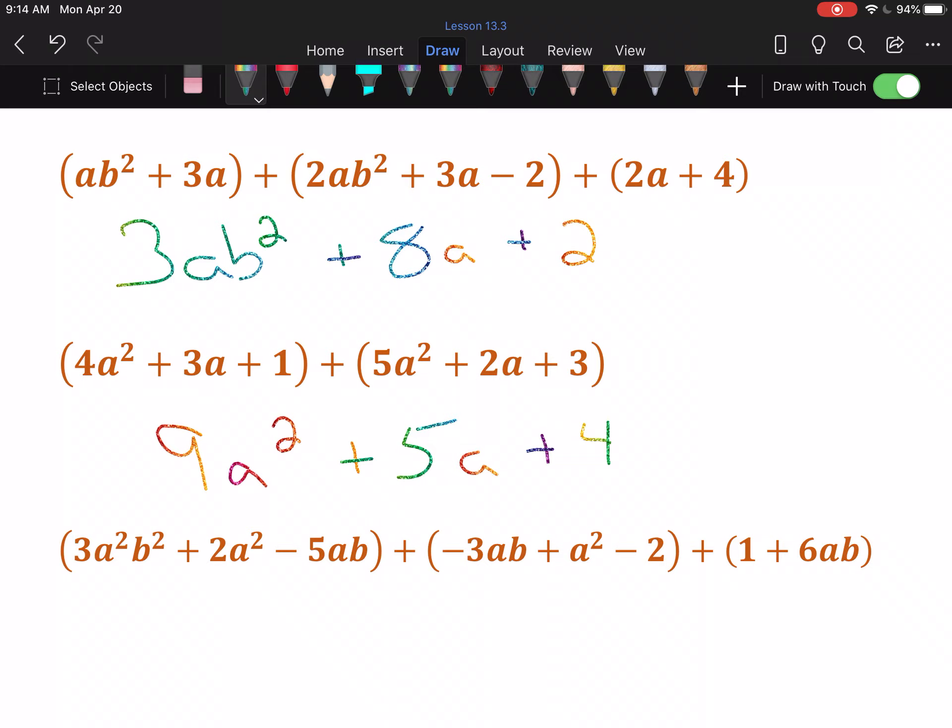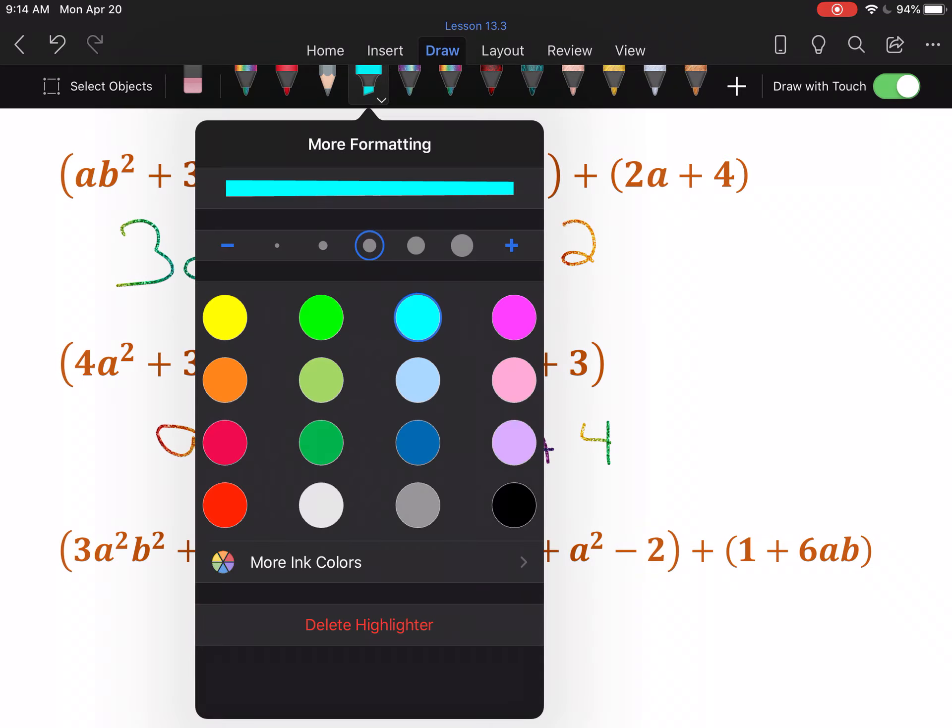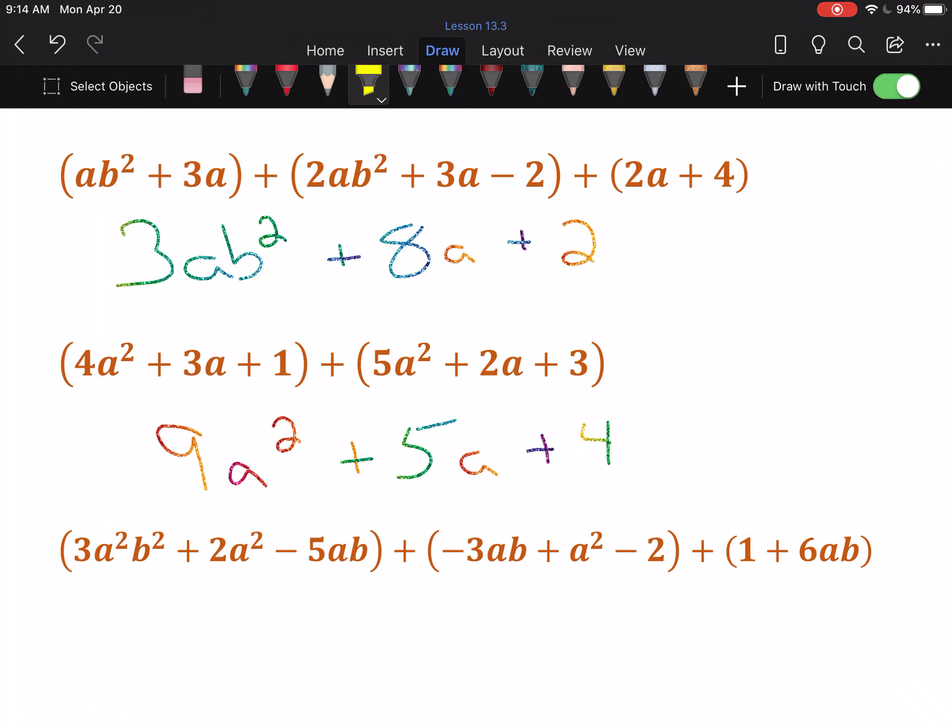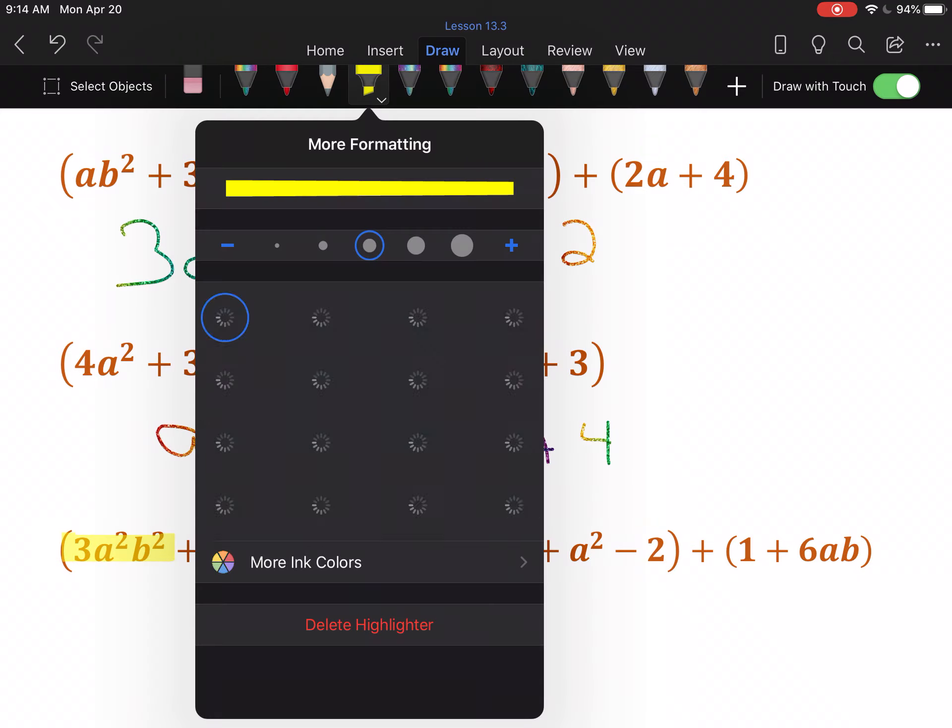And lastly here, we've got a whole bunch of stuff, so this one might be a good time for me to break out the highlighters again. So a²b² has the most exponents, and there is only the 1 that has all of that.